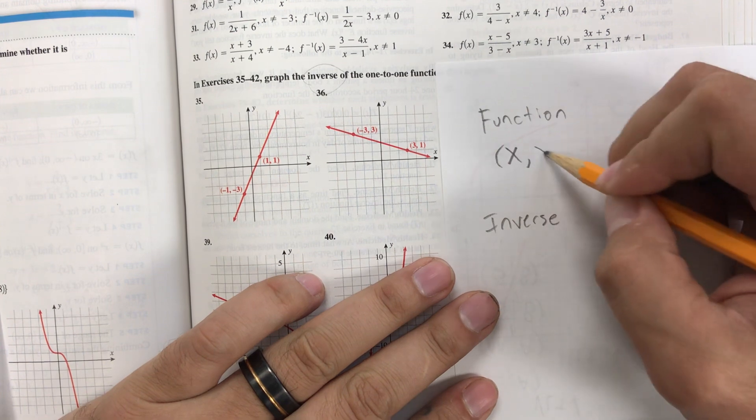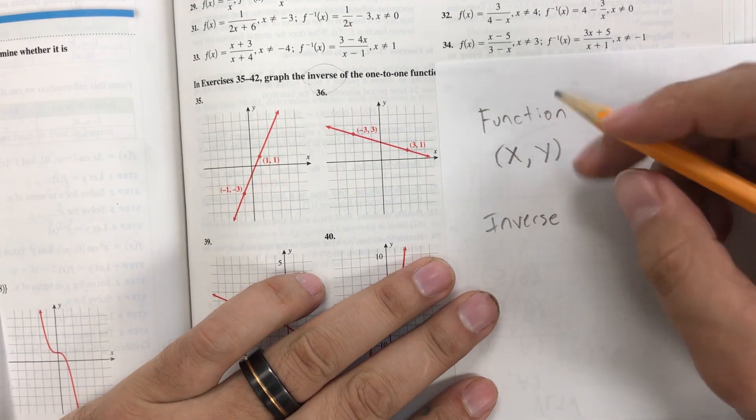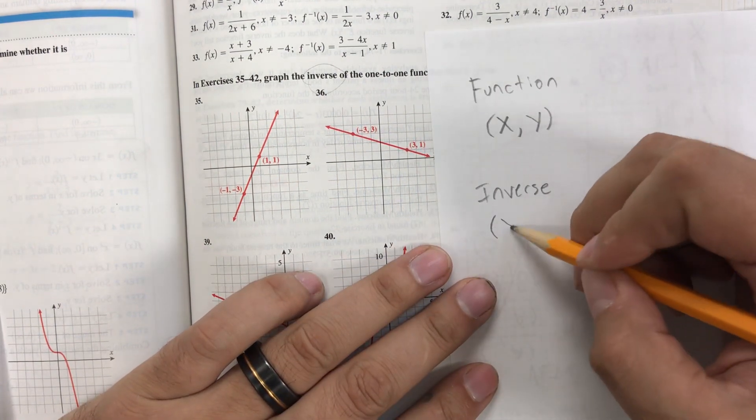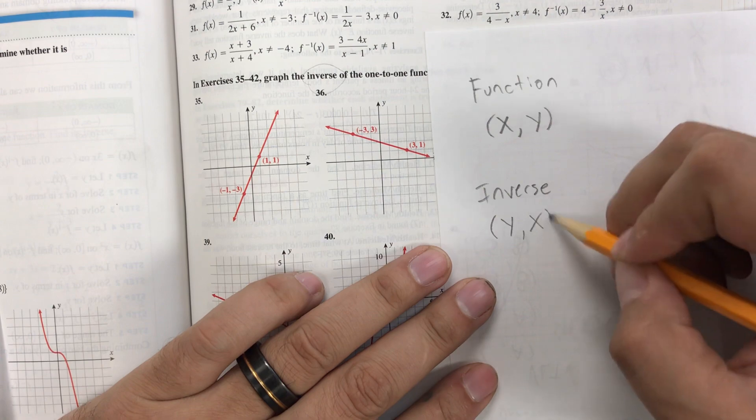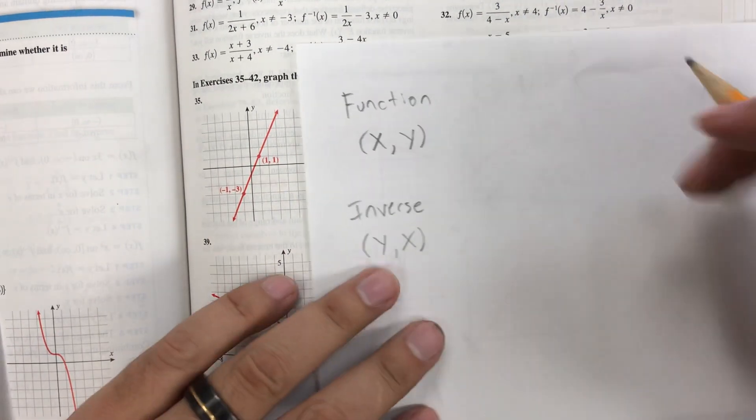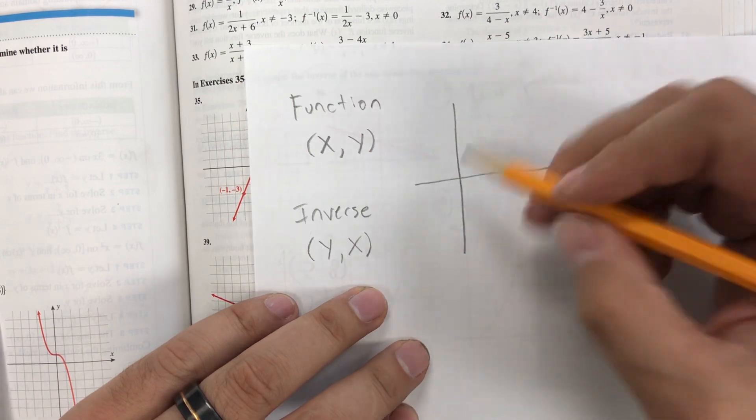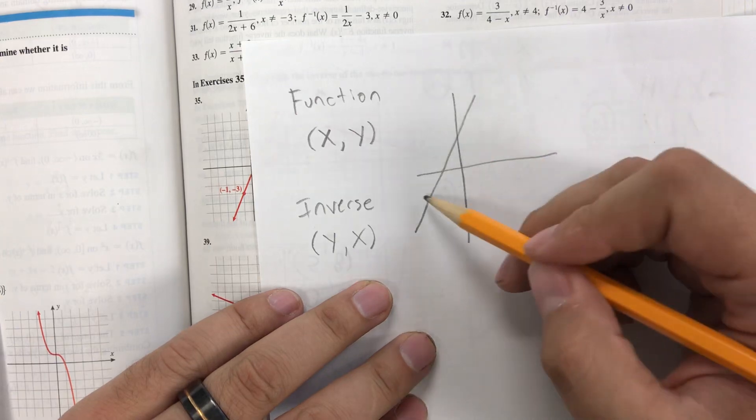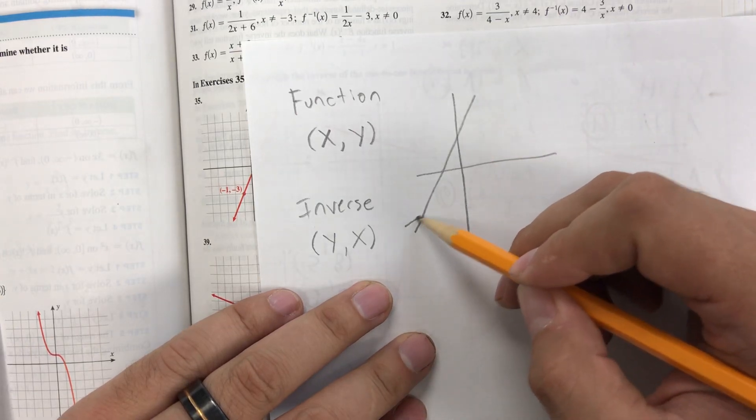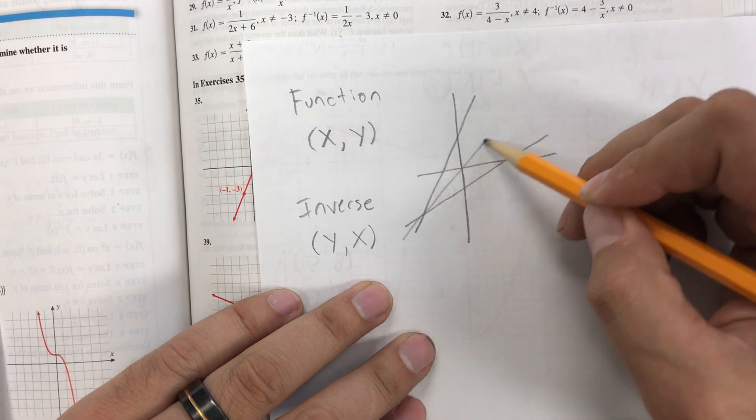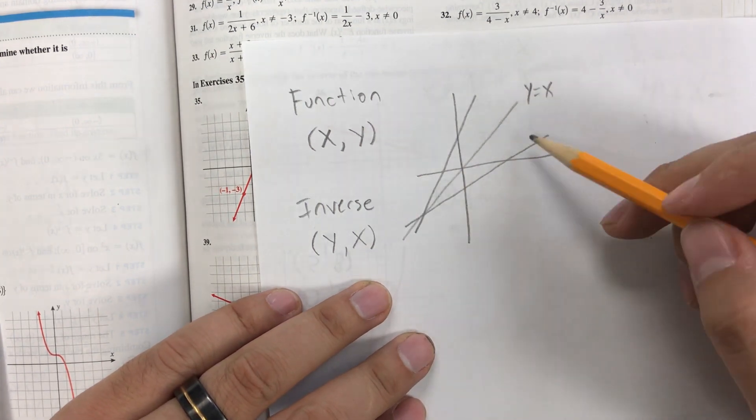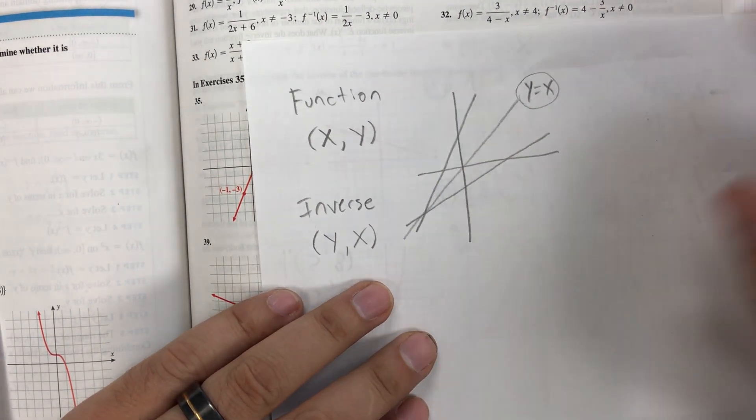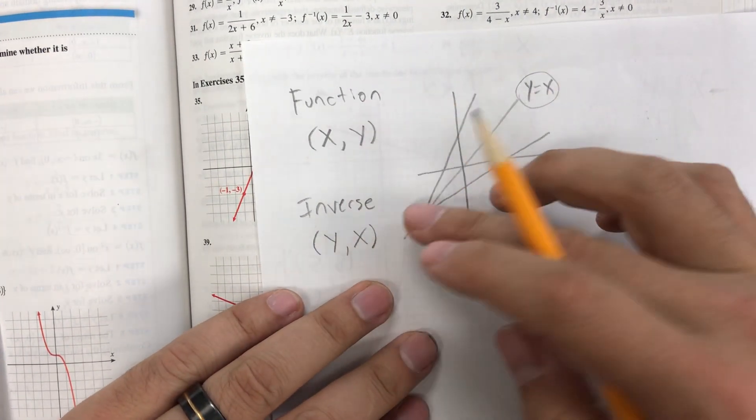If you have some coordinate in the original function, like (x, y), to find that exact same coordinate in the inverse, all you need to do is just reverse the two numbers. So it's a real easy way to graph it out. This comes from the idea that a function and also its inverse are going to be reflected over the line y equals x. So it's reflected over the line y equals x. What this says is that the x and the y values basically switch. So that's the whole idea behind how to graph it out real easily.